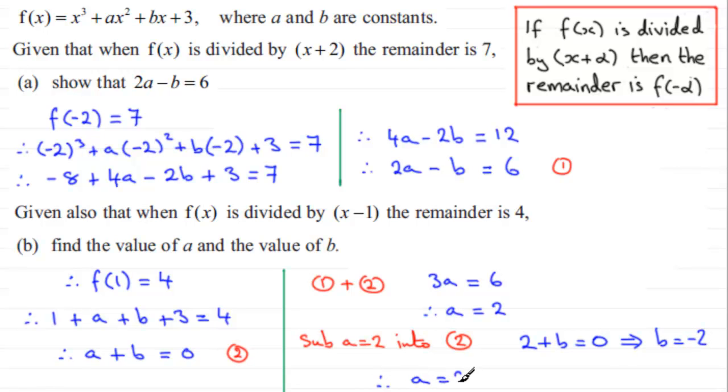So in summary then, therefore a equals 2 and b equals minus 2.